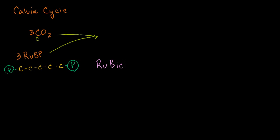All of this is happening with that big rubisco protein or enzyme. Rubisco stands for ribulose biphosphate carboxylase — it's essentially telling you that it merges a carbon onto ribulose biphosphate. In this situation, you end up using six ATPs and six NADHs, and you'll end up with glyceraldehyde 3-phosphate, or G3P, also called phosphoglyceraldehyde or PGAL.